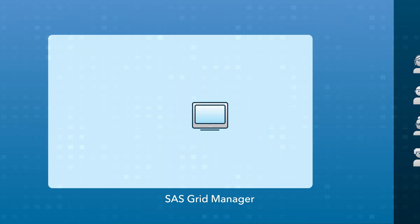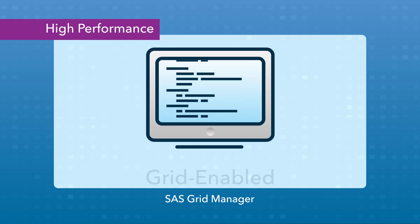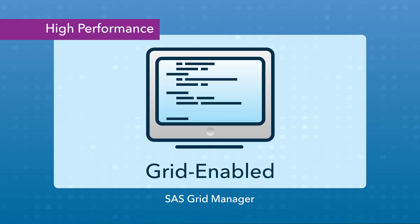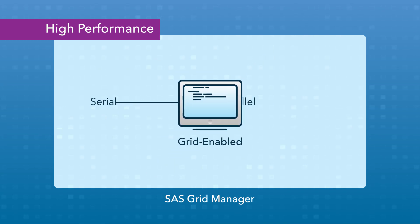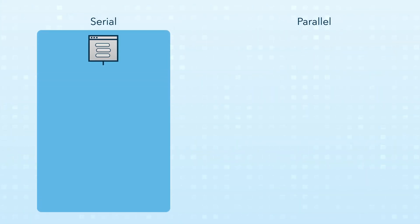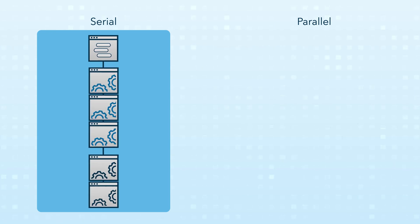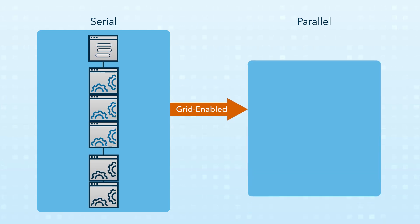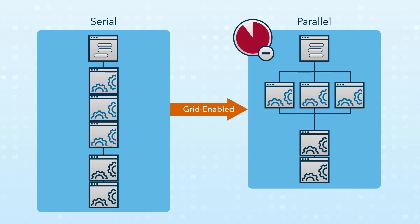SAS programmers can analyze new and existing code to determine whether it can be grid enabled, which further accelerates results. Some jobs that normally run serially can be converted so that individual steps run in parallel. For example, a program creates a SAS data set and then runs three independent reporting or analytic steps on that newly created data. When the program is grid enabled, the three steps run in parallel and execution time is reduced.